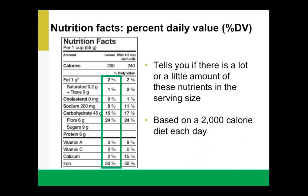The next part of the food label you'd want to consider is the percent daily value, generally found on the right side of the nutrition facts table and given for most nutrients. The percent daily value tells you if there is a little or a lot of a nutrient. A percent daily value of 5% or less is considered low, whereas 15% or more is considered high. For example, in one cup of this cereal there is six grams of fiber — it might be hard to know if that's a little or a lot without context.